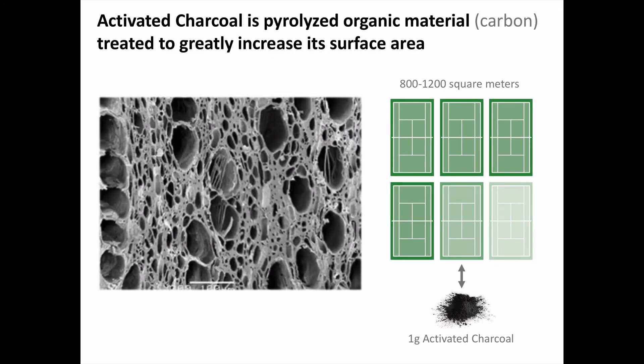So what is activated charcoal? Charcoal is the pyrolyzed, or heat-decomposed, remains of various organic materials, most commonly made from wood, coconut husks, or peat. Pyrolysis occurs in an inert atmosphere, meaning that the carbon is not actually oxidized or burned away, so you're basically left with only a carbon skeleton as shown in the electron micrograph on the left-hand side.